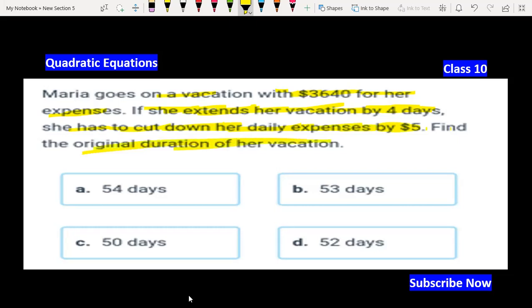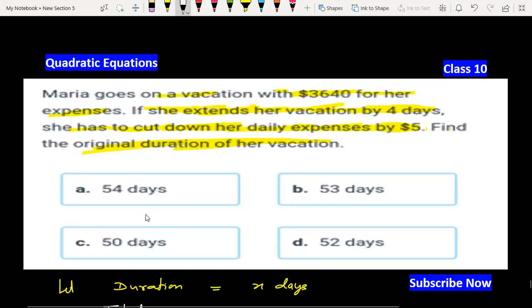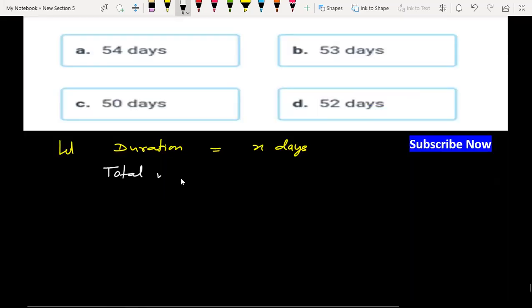We have to find the original duration of her vacation. Let's start the question. Let duration equal x days. Total money she has is $3640.